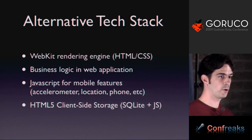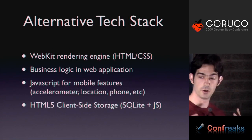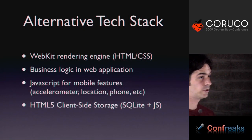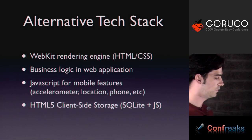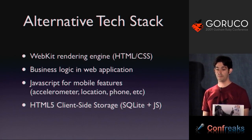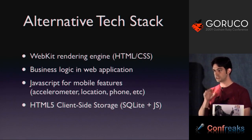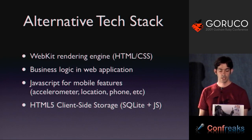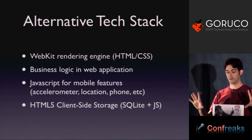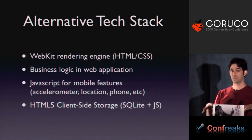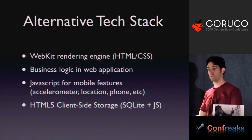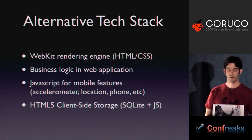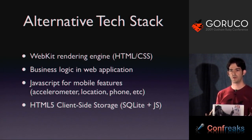So I'd like to propose an alternate technology stack — one that could be used for rapid prototyping, in production, or just as a theoretical discussion. This is the core of the talk. What I'm proposing is using WebKit as your view layer. WebKit is the rendering engine in Safari, in Chrome, on both mobile devices, and on Palm Pre when that releases. That gives you HTML, CSS, and JavaScript as your front end. Then take your business logic — instead of putting it into client-device libraries, it lives in your web application, whether that's server-side Rails logic or client-side JavaScript.